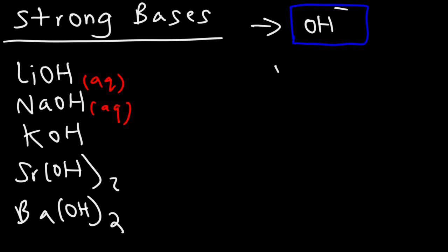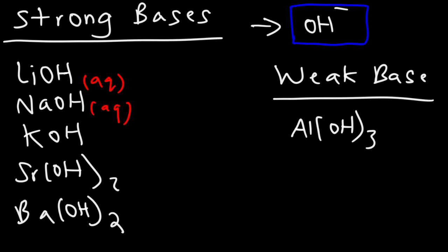An example of a weak base that contains hydroxide would be aluminum hydroxide. This base is not soluble in water under neutral conditions. So let me give you an example. Because lithium hydroxide is soluble in water, it's going to completely dissociate into the lithium ion and the hydroxide ion. And just as the strong acid completely dissociates into H3O+ and the conjugate base, strong bases, they completely dissociate into their respective ions.